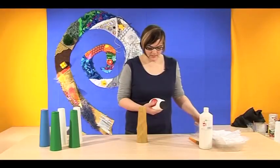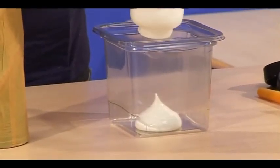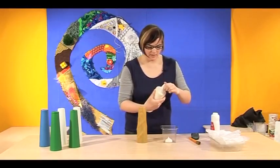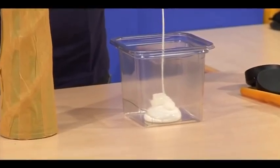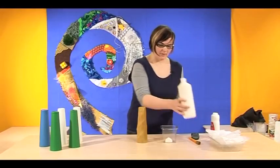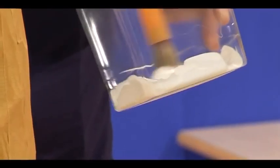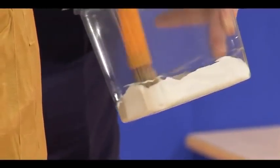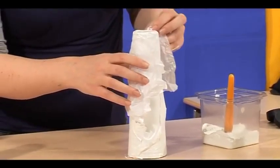I'm going to use some acrylic paint. I'm going to use some PVA. A little bit of glue will make the paint a bit gloopier and a bit stickier, and it will be a little bit easier when we come to stick on the tissue paper.